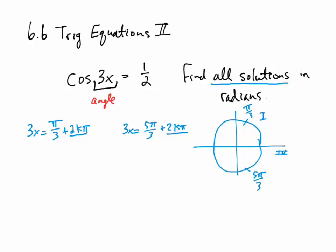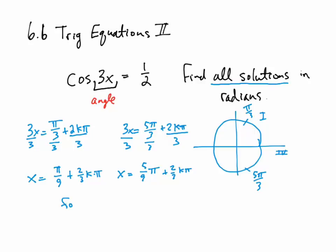We just have to solve for x by dividing everything by 3. We get x equals pi over 3 divided by 3, which is pi over 9 plus 2/3 k pi — that's one solution. For the second equation, dividing by 3 gives x equal to 5/9 pi plus 2/3 k pi, for any integer k. That is our solution.